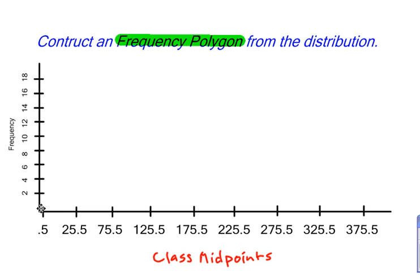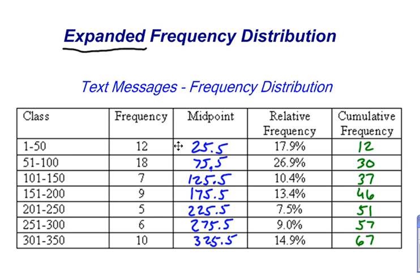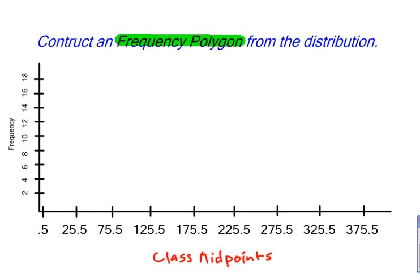And all I'm going to do is I'm going to put some dots at each midpoint with the appropriate frequency. So if we go back, this class had a midpoint of 25.5 and its frequency was 12. So I'm going to put a dot right there. So 25.5, the frequency was 12. Right about here is my dot. And then I continue to do that.